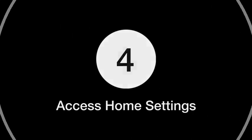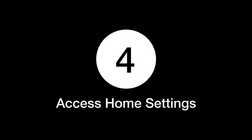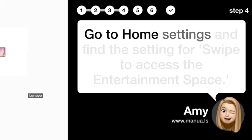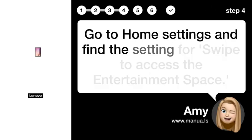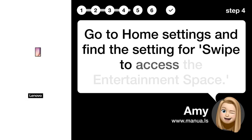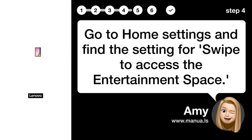Step 4: Access home settings. Go to home settings and find the setting for swipe to access the entertainment space.